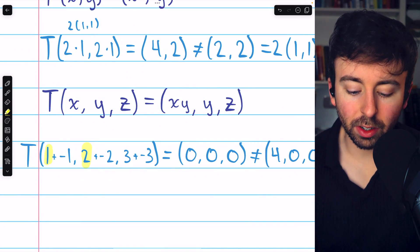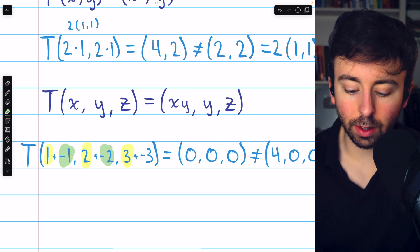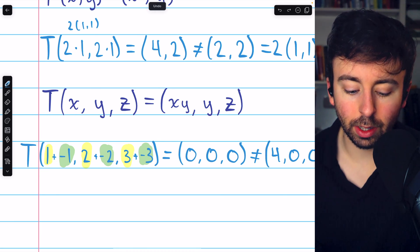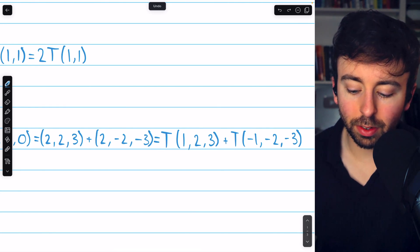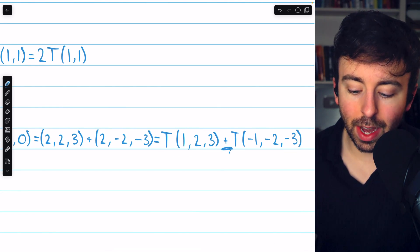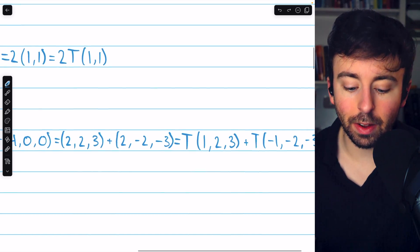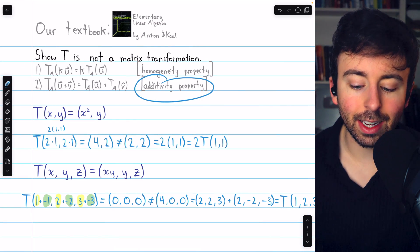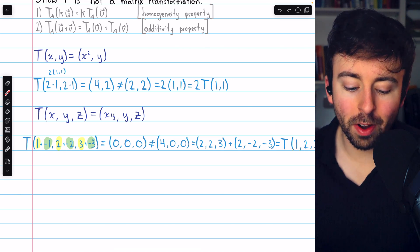On the left side of this line, we have a vector (1,2,3) being added to a different vector (-1,-2,-3), and we're plugging that sum of vectors into the transformation. On the right, we're plugging those two vectors into the transformation separately and then adding their images. These two things should be the same if this is a matrix transformation because, as we know, matrix transformations satisfy the additivity property. But, of course, it turns out these things are not equal.